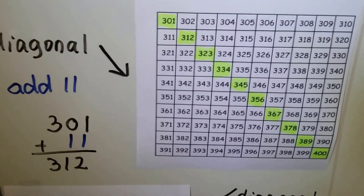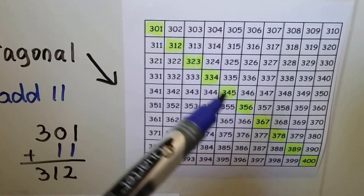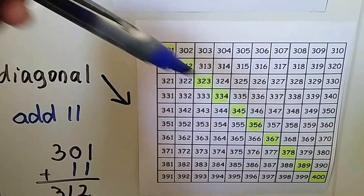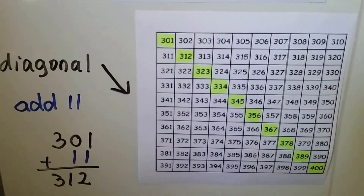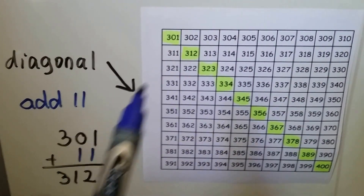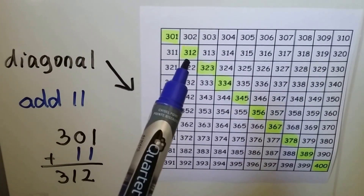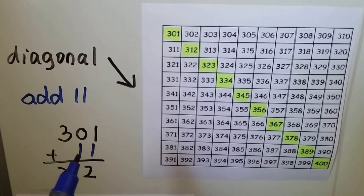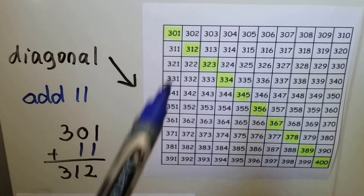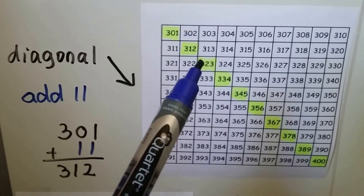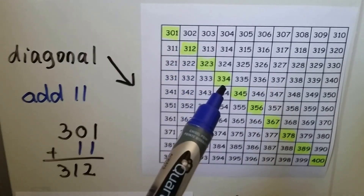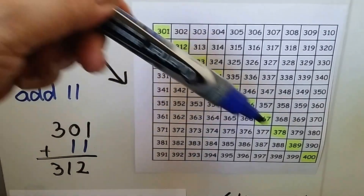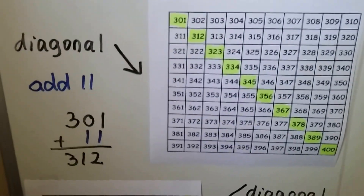Look at this pattern. If we go down diagonally — when we come down on a slant, that's diagonal — it's adding 11. If we have 301 and it goes down to 312 diagonally, that's 11 more. 323 is 11 more than that one, and 334 is 11 more than that. So as we go down diagonally this way, it's adding 11.